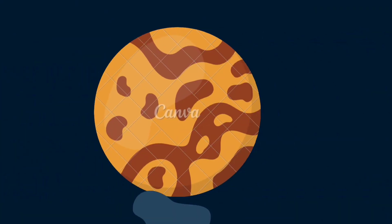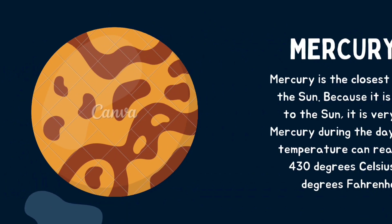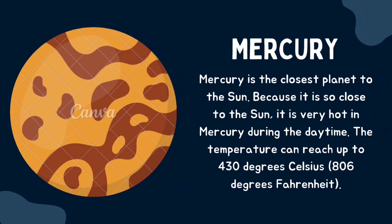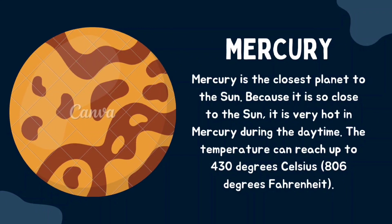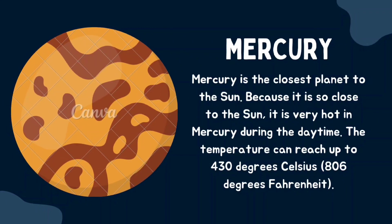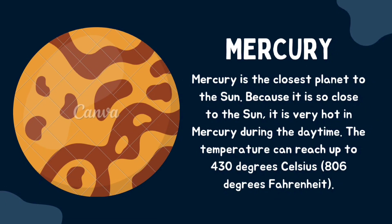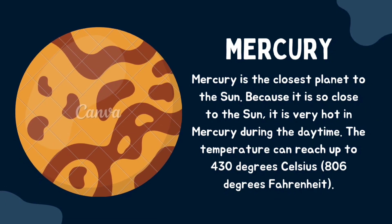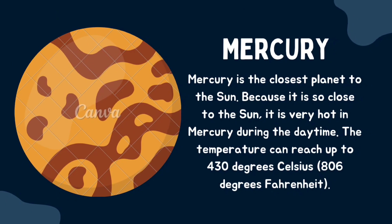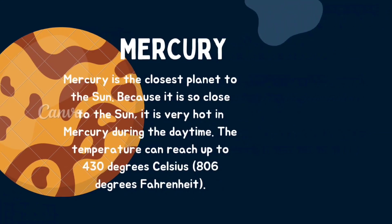The number one planet nearest to the sun is Mercury. Mercury is the closest planet to the sun. Because it is so close to the sun, it is very hot on Mercury. During the daytime, the temperature can reach up to 430 degrees Celsius, or 806 degrees Fahrenheit.